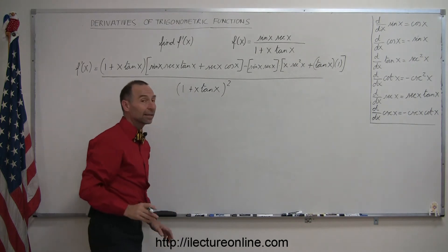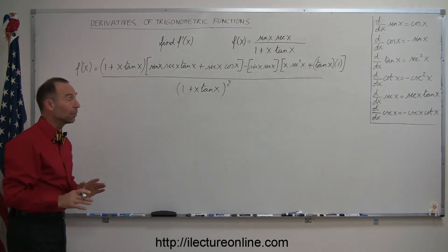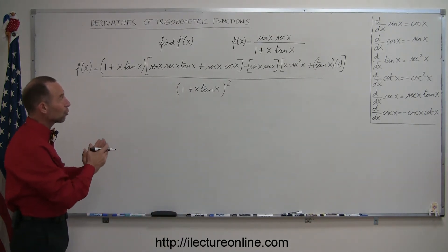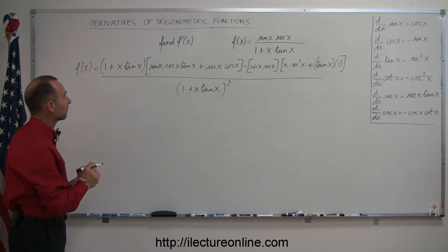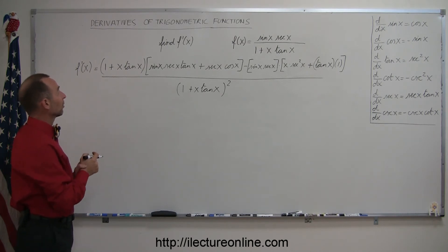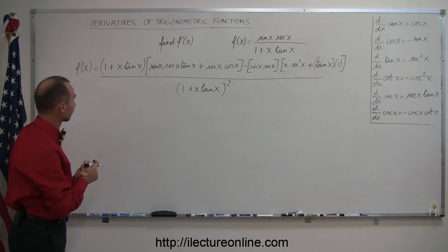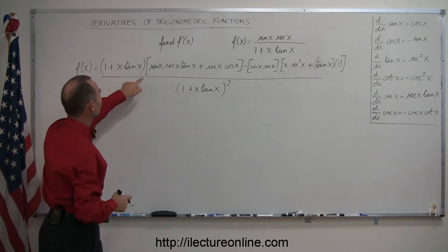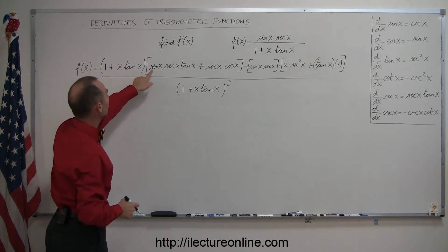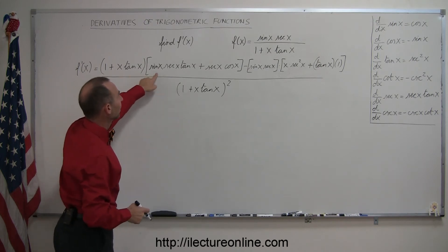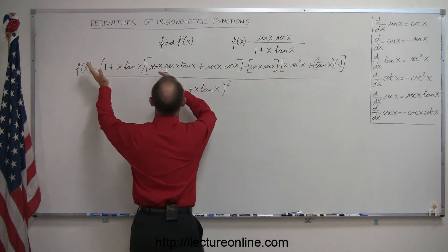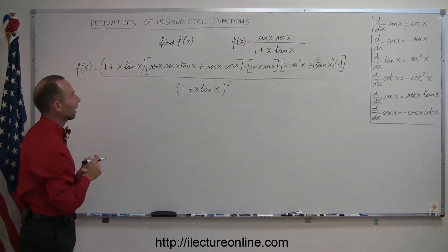That gets quite complicated, so remember to be very methodical and make sure you use the rules as they apply. Now we should probably try to simplify this a little bit. With 1 plus x times tangent of x multiplied in, and we don't have a matching factor on the other side, we obviously cannot factor that out.